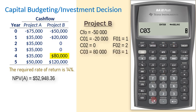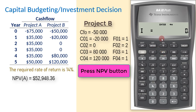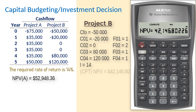C03 will be $80,000, enter, scroll down. And C04 will be $120,000, enter. Press the NPV button, interest rate again is 14, enter, scroll down, and then Compute NPV. And now we have $42,146.80.